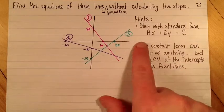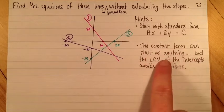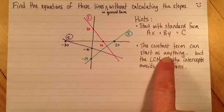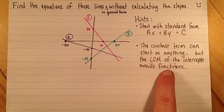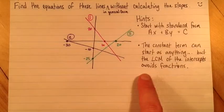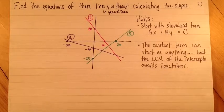Another hint is, we're going to choose the constant term, and you can start with anything. You can start with 1, which is a common way of doing this. But if we choose the lowest common multiple of the intercepts, that will avoid us having any fractions, because in general form we're not allowed to have fractions.